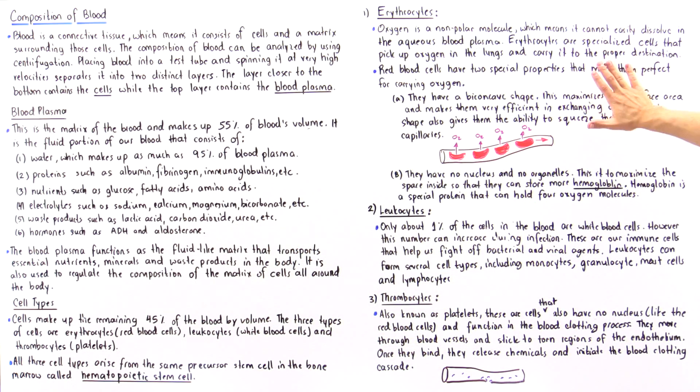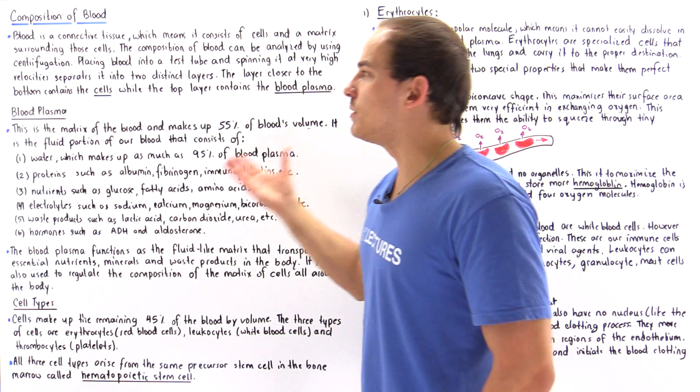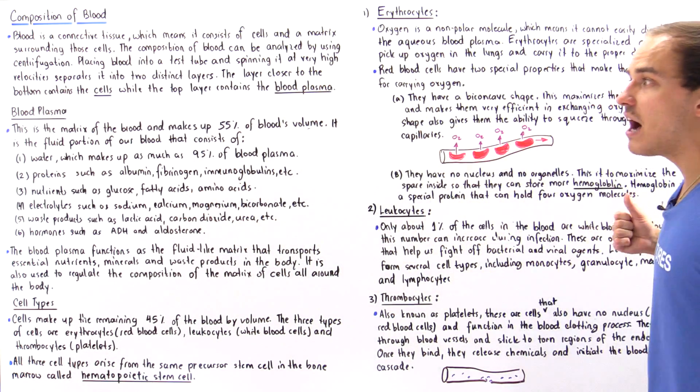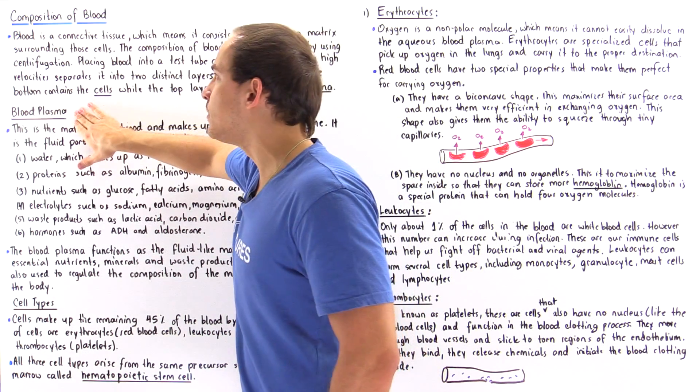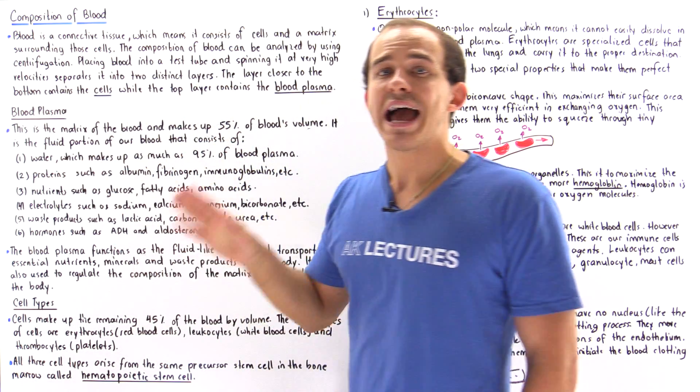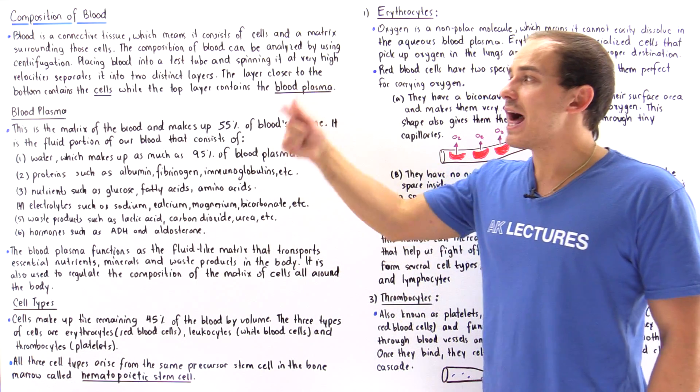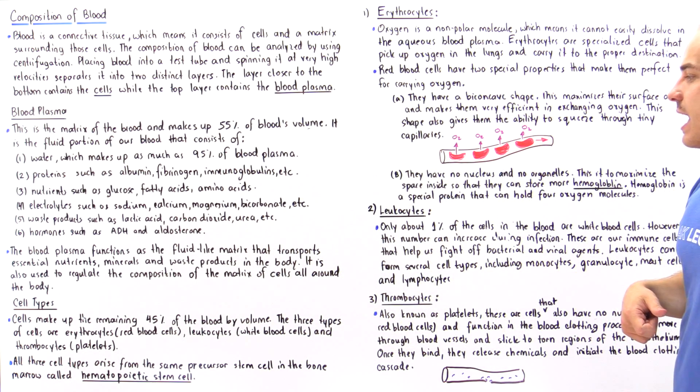So these are the three different types of cells that are found within our blood. And along with these cell types, we also have the blood plasma inside the blood, which is basically the extracellular matrix that is found around these cells.